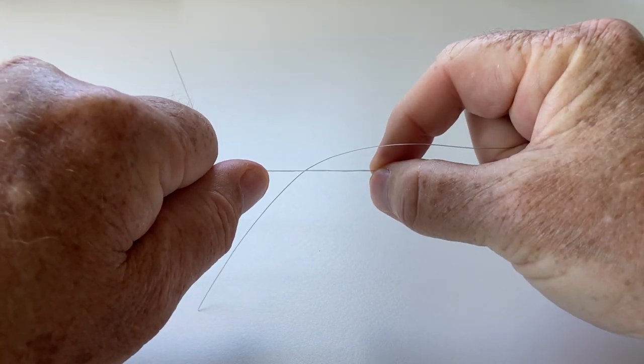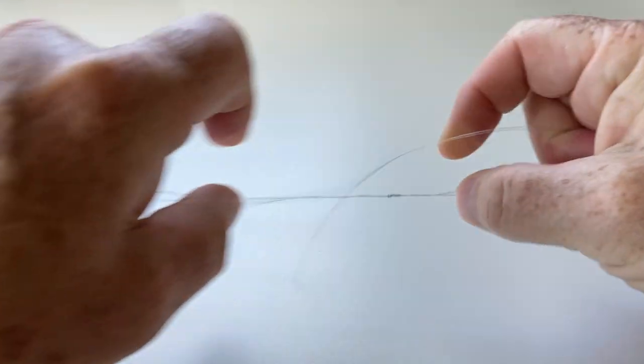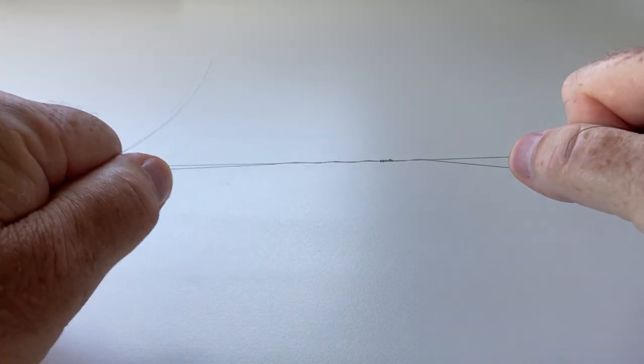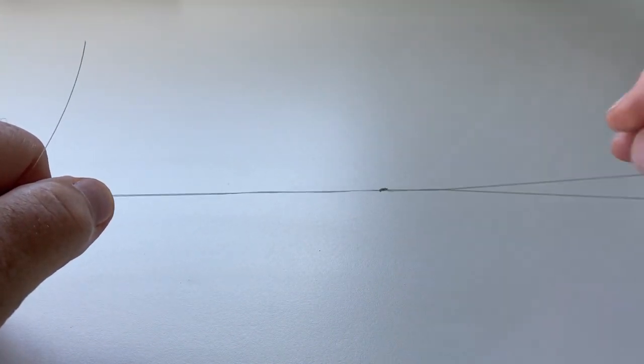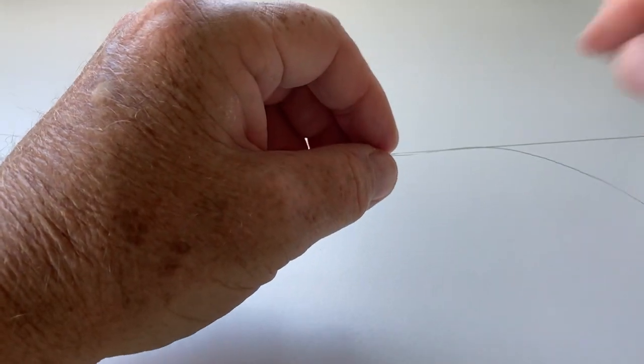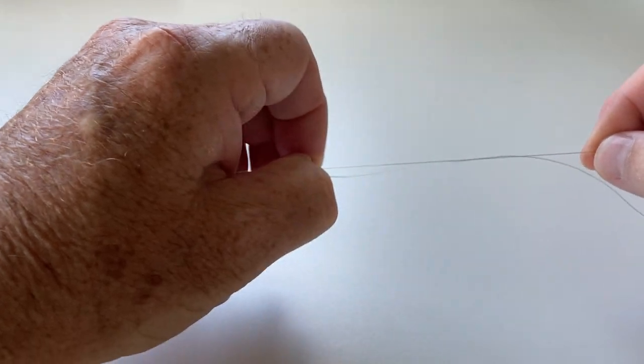Now you can pull it tight. Draw it together, just pull it towards each other, a bit more pressure and as you can see we've now got a good knot.